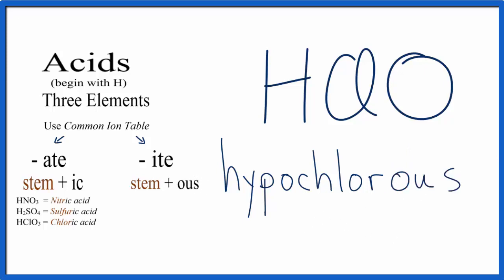And then we'll add the name. So that means the name for HClO is hypochlorous acid. This is Dr. B, and thanks for watching.